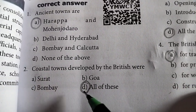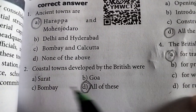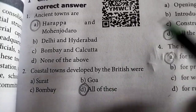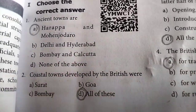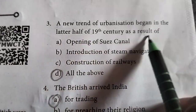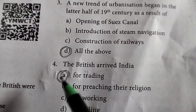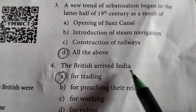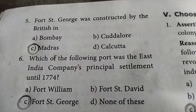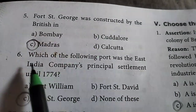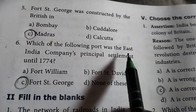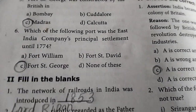Second answer is all of these — Surat, Goa, Bombay. Third question answer is D. Fourth question answer is A. Fifth question answer is C. Sixth question answer is C.